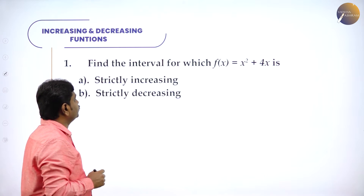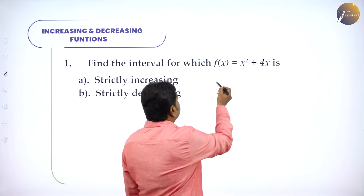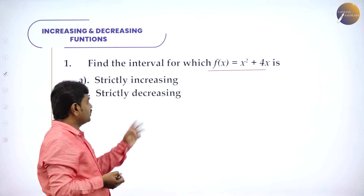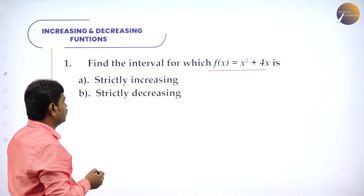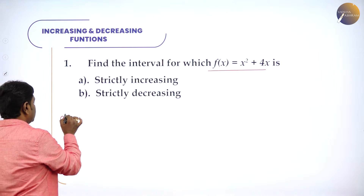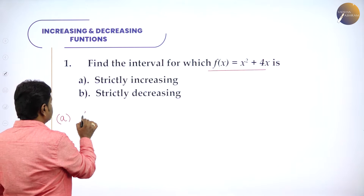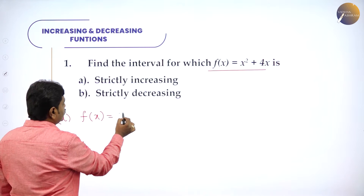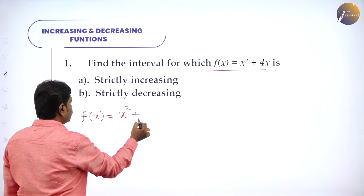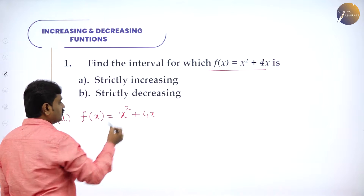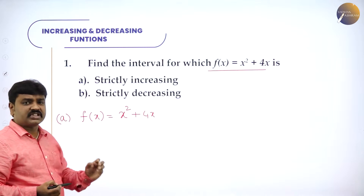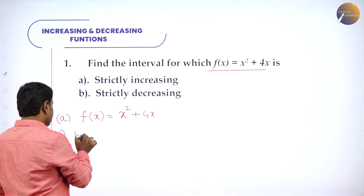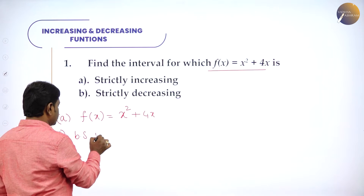The first question: find the interval for which f(x) = x² + 4x is strictly increasing, and the second part, strictly decreasing. For the first part, strictly increasing — given f(x) = x² + 4x. Now differentiate both sides with respect to x.